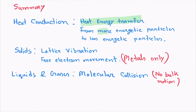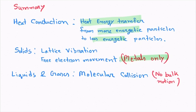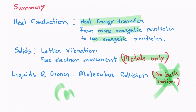Now let's look at the summary of heat conduction. Heat conduction can be defined as heat energy transfer from more energetic particles to less energetic particles. In solids, liquids, and gases there are different mechanisms: for both metals and non-metals, the dominant mechanism is lattice vibration; for metals alone, the dominant mechanism is also free electron movement, which does not apply to non-metals such as glass or ceramics. In liquids and gases, the dominant mechanism is molecular collision, but there cannot be any bulk motion — if there is bulk motion, that mechanism is called heat convection. The topic of the next video will be Fourier's law of heat conduction.